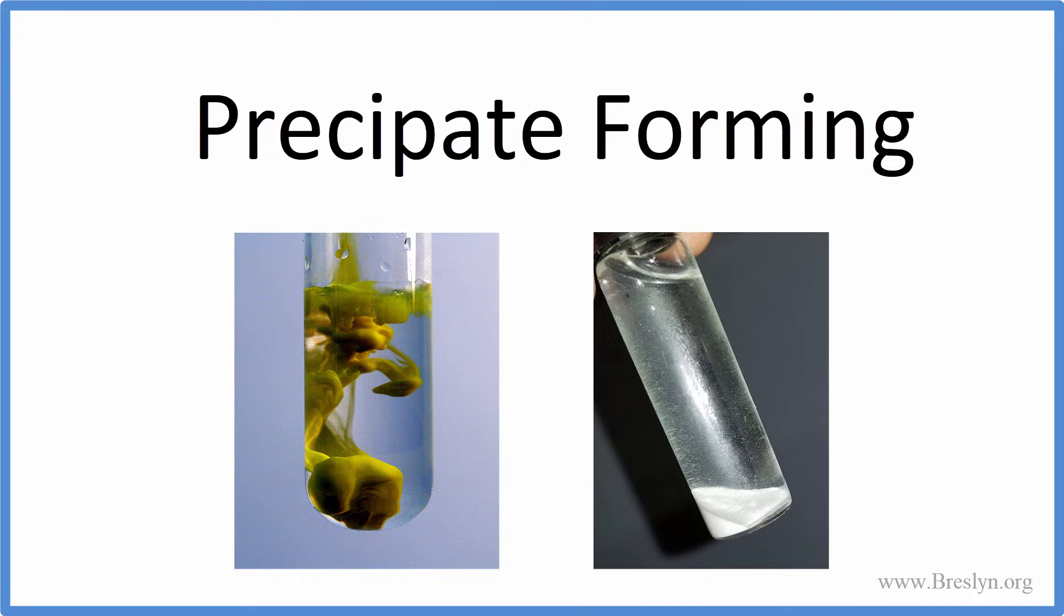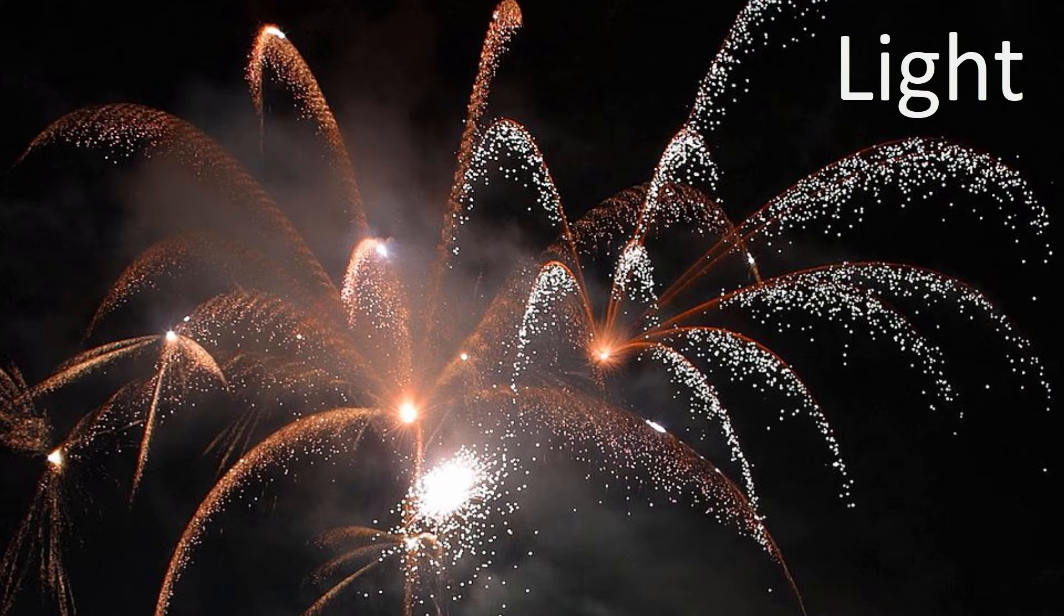When you see a precipitate, you're pretty sure a chemical reaction took place. Another sign of a chemical reaction is when light is given off. This happens frequently when we burn things. Combustion.